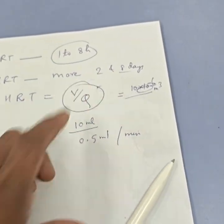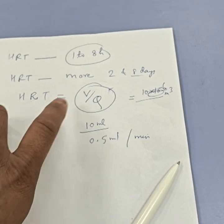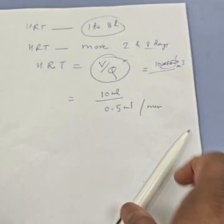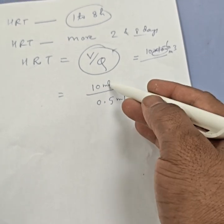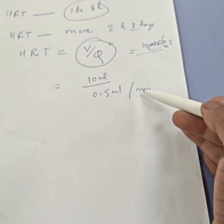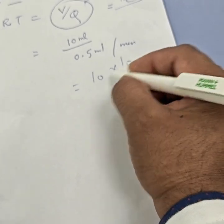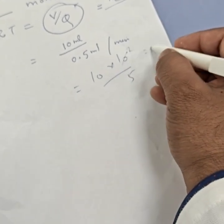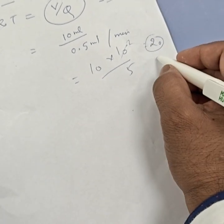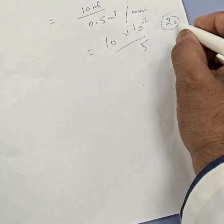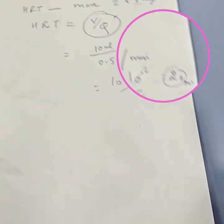This is the ratio of the volume over flow rate. In our case we collected around 10 ml of water, so this is the volume V, and Q is 0.5 ml per minute. So it will be 10 divided by 0.5, which equals around 20 minutes. You can convert that to days or hours.